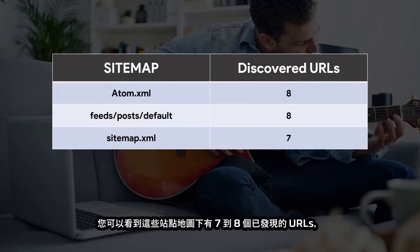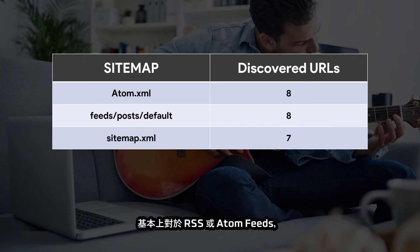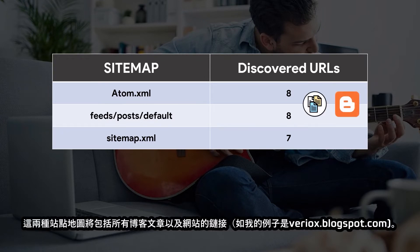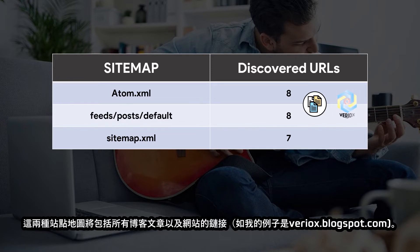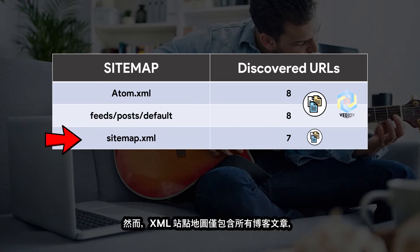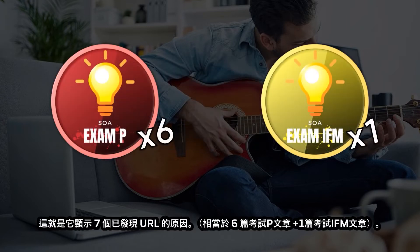You can see there are seven to eight discovered URLs under these sitemaps. You might wonder why there is a difference between the number of discovered URLs. For RSS or Atom feeds, these sitemaps include all the blog posts and the website link — in my case, variox.blogspot.com. Meanwhile, the XML sitemap only includes all blog posts, which is why it shows seven discovered URLs, equivalent to six exam P posts plus one exam IFM post.